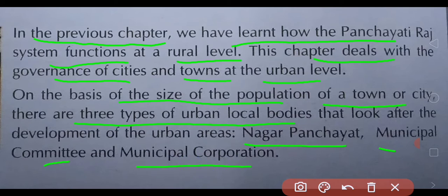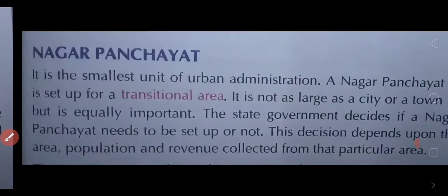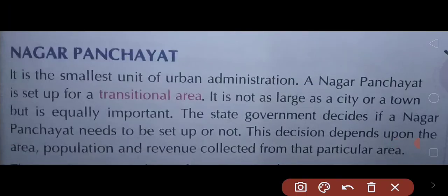Now we will study all these levels one by one. The first one is Nagar Panchayat. It is at the smallest level of urban administration. It is the smallest unit of urban administration and Nagar Panchayat is set up for a transitional area. A transitional area means it is not as large as a city or town.